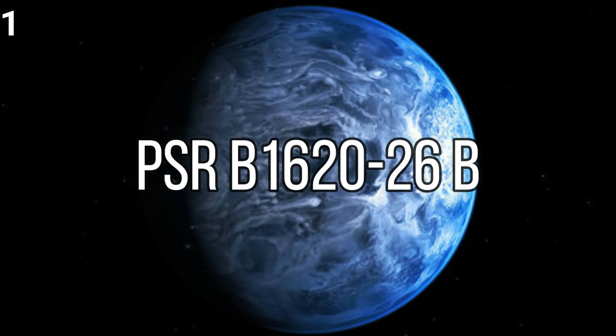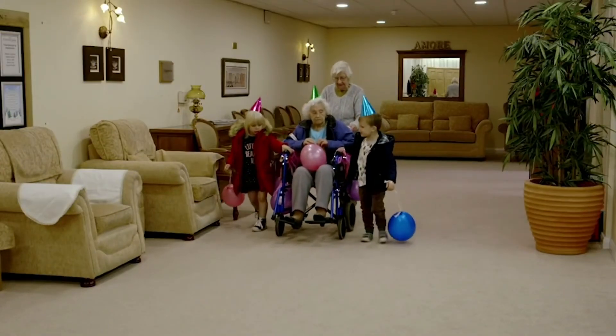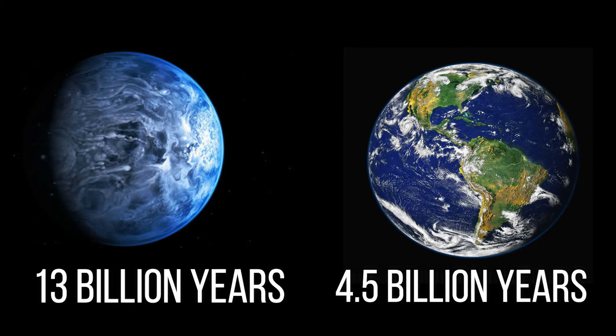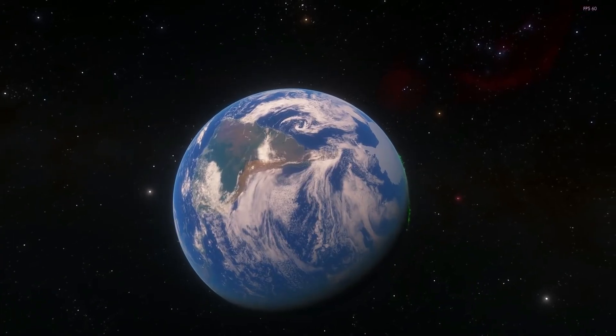Number 1: PSR B1620-26 b. We should respect our elders, whether it is human or planet. At an estimated age of 13 billion years, this planet is more than twice as old as Earth's 4.5 billion years. It's about as old as a planet can be. Due to its extreme age, it's called by its nicknames Methuselah and the Genesis Planet.